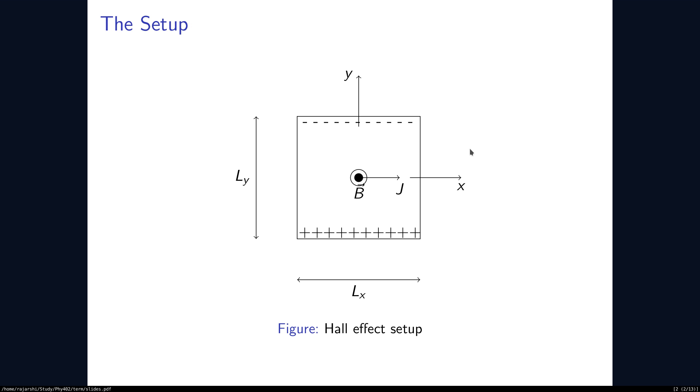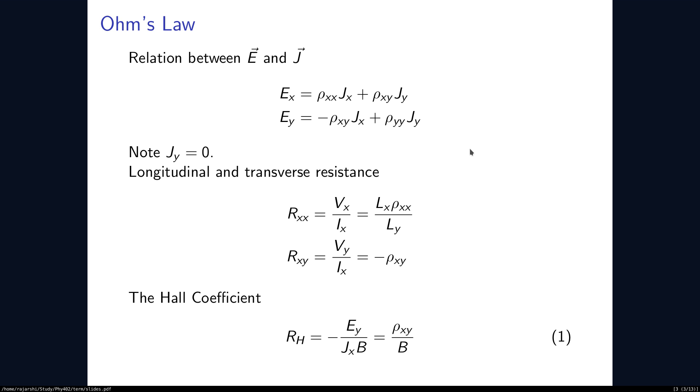We can imagine that when we increase the magnetic field, the charges are going to accumulate more and more because the force is larger. And because of this larger force, the potential will be higher. So, we can imagine that rho xy will be proportional to B and this proportionality constant is called the Hall coefficient.